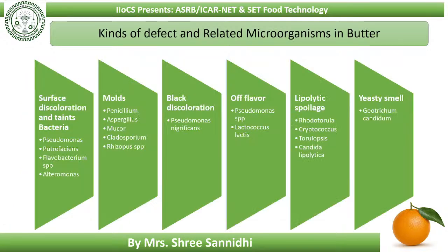Defects in butter include: surface discoloration and tints caused by Pseudomonas putrefaciens, Flavobacterium species, and Alteromonas; molds commonly found on butter are Penicillium, Aspergillus, Mucor, Cladosporium, and Rhizopus species; black discoloration caused by Pseudomonas nigrificans; off-flavor caused by Pseudomonas species and Lactococcus lactis; lipolytic spoilage caused by Rhodotorula, Cryptococcus, Torulopsis, and Candida lipolytica; and yeasty smell caused by Geotrichum candidum.